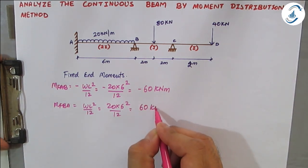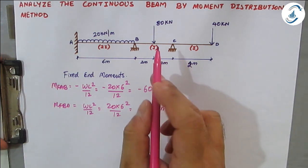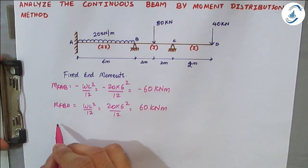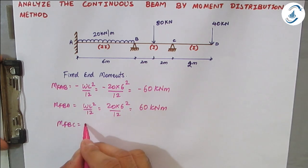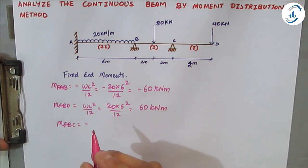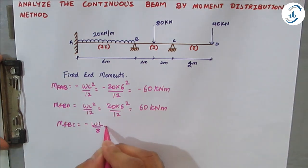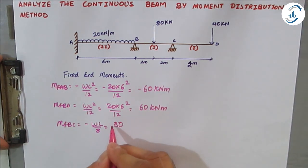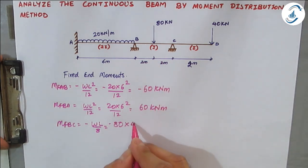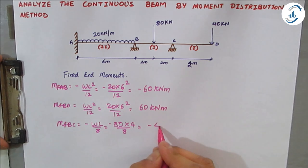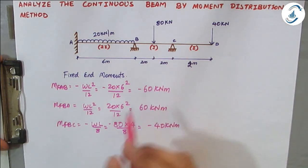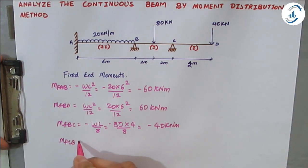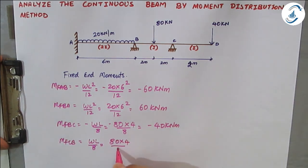Next is the point load at the center. MF_BC is anti-clockwise so negative. For a point load at the center the formula is WL/8, so 80 × 4 / 8 = −40 kilo-newton meter. MF_CB is clockwise so positive: 80 × 4 / 8 = +40 kilo-newton meter.